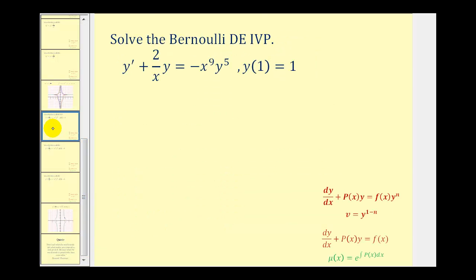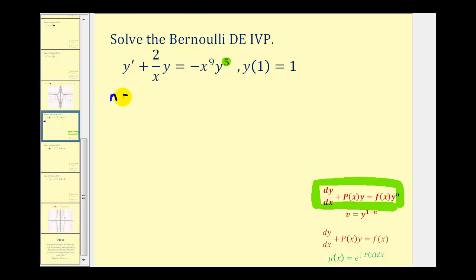The first step is to recognize that the given differential equation does fit the form of a Bernoulli differential equation, and that it's in the correct form, meaning the first term is y prime or dy/dx. Next, we need to recognize that n is equal to 5 based upon the power of y. So if n is equal to 5, we're going to use the formula v equals y raised to the power of 1 minus 5, or negative 4.